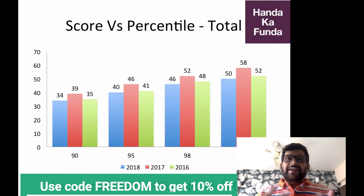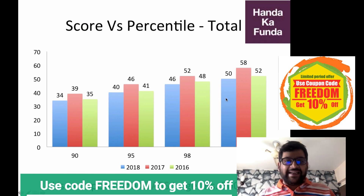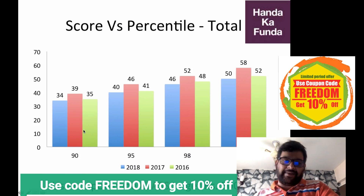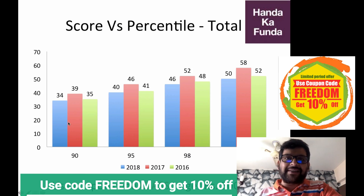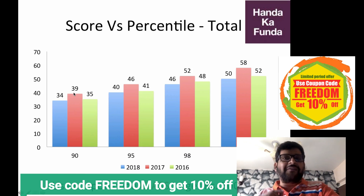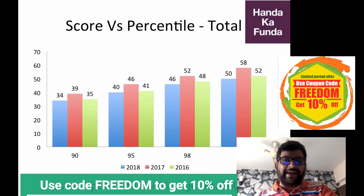Let's have a look at the kind of score versus what percentile you get — this is for the complete CAT exam. For a 90 percentile in 2018 and 2016, you needed roughly 34-35 questions. 2017 was a little easier where you needed to solve 39 questions correctly to get a 90 percentile.